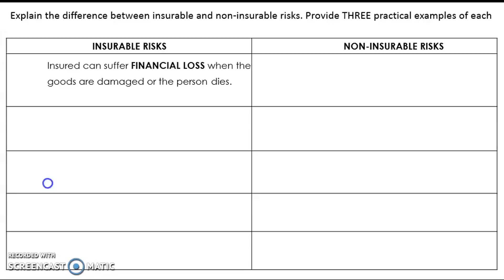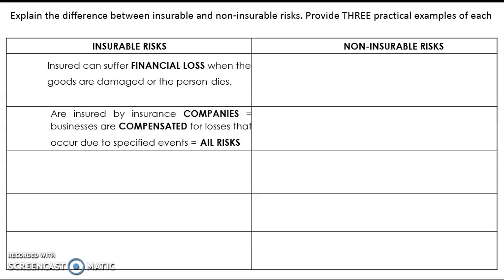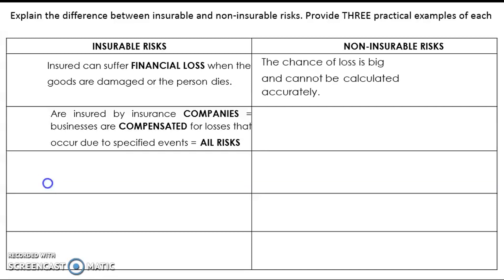Insurable risks: the insured can suffer financial loss when goods are damaged or a person dies. Insurable risks are covered by insurance companies, which means businesses are compensated for losses that occurred due to a specific event.